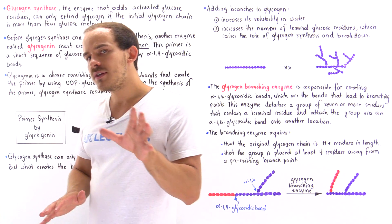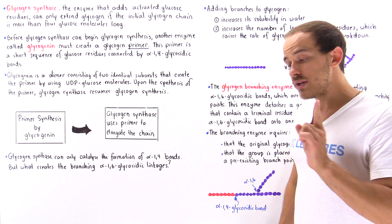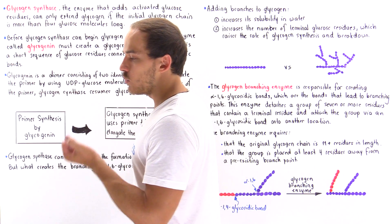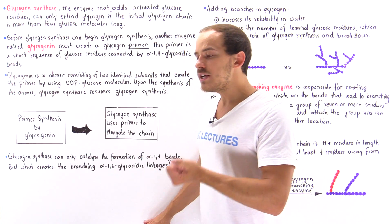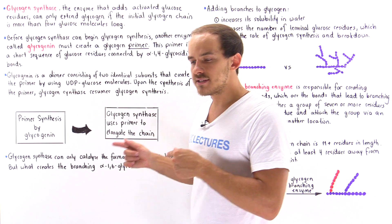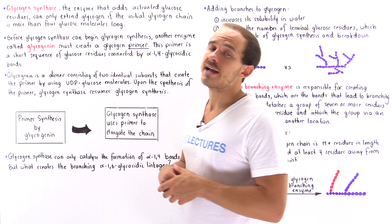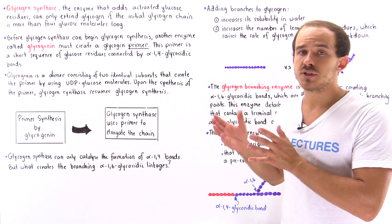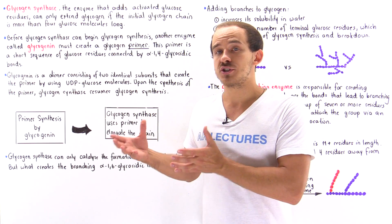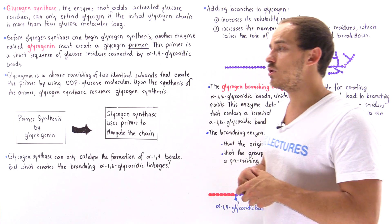Before we discuss the enzyme that creates these alpha-1,6-glycosidic bonds, let's answer an important question: why do these branching points exist? Remember, the alpha-1,6-glycosidic bonds actually create the branching points in glycogen. Why do these branching points exist, and how do they benefit the molecule as a whole?